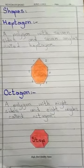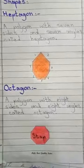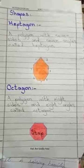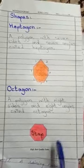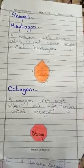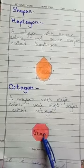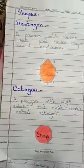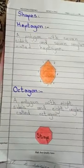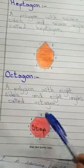Our next shape is octagon. The word octagon sounds like octopus. This is the octagon shape. Now, this is a traffic sign — the red color shape. Which shape is this? This is an octagon, because it has eight sides and eight corners.